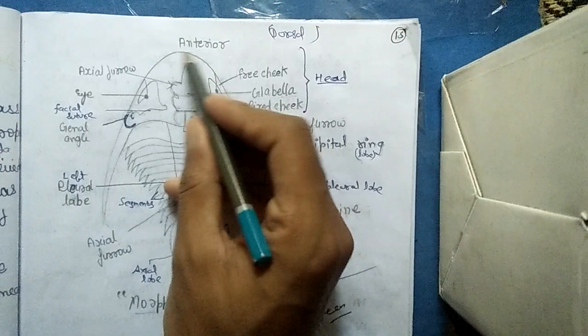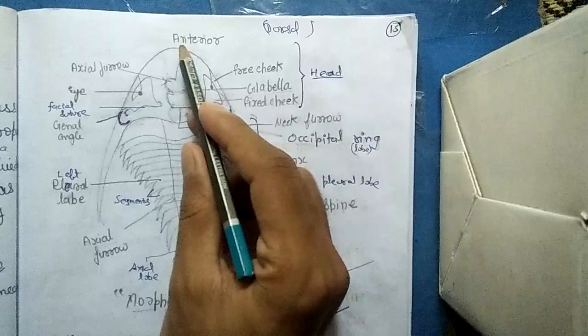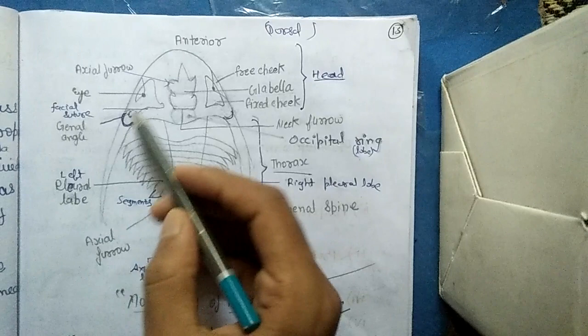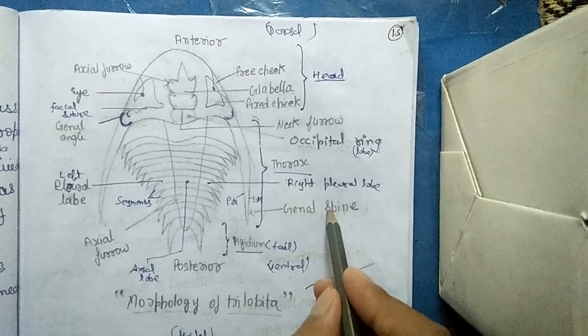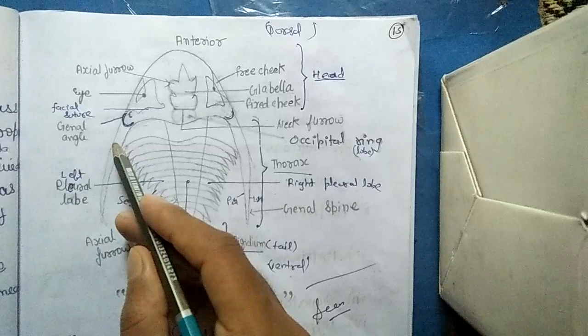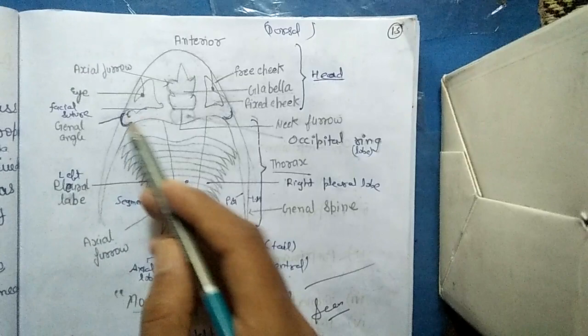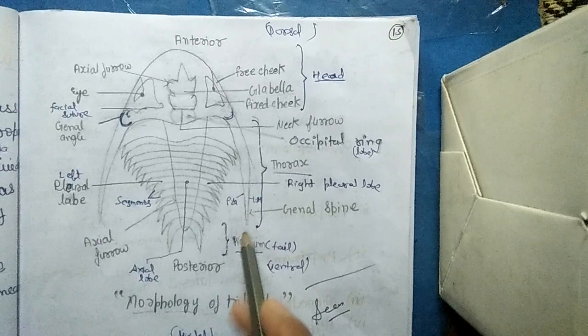The angle posterior to the cheeks is called genal angle. These are the genal angles, and when genal angles are produced posteriorly they are called genal spine. Genal angles are the angles subtended between lateral margin and posterior margin.